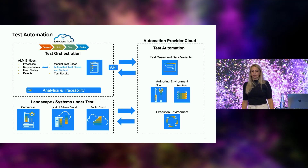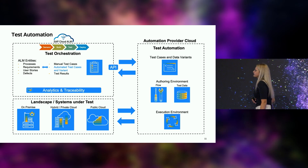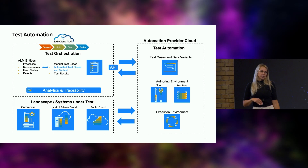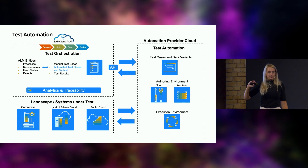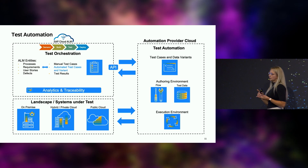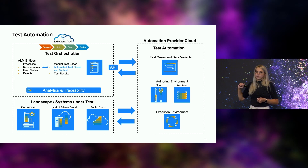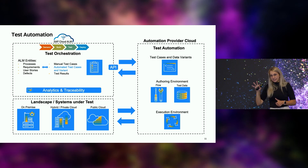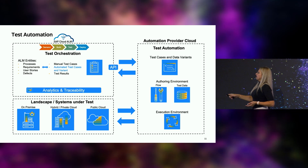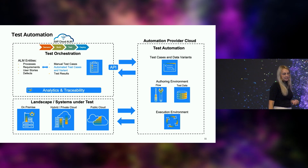We've talked a lot about how test management works. Now I want to give you a glimpse about test automation. We follow the strategy that everybody does what they do best: test orchestration is done in SAP Cloud ALM — you prepare your test cases, do test planning, and have test results there. Test automation is done on the automation provider side, where the test cases, variants, flow, test data, and environment information are physically stored.